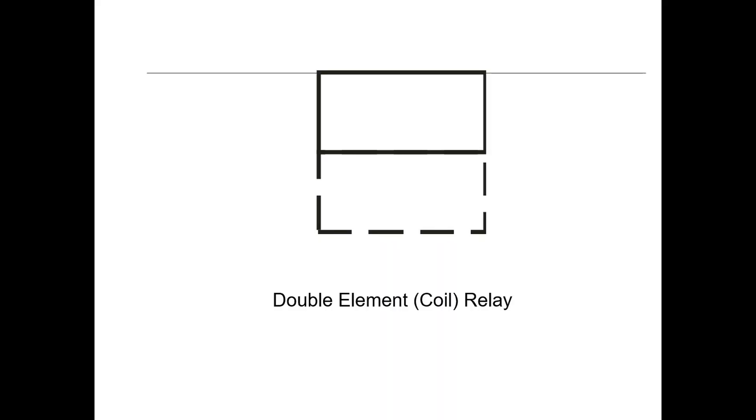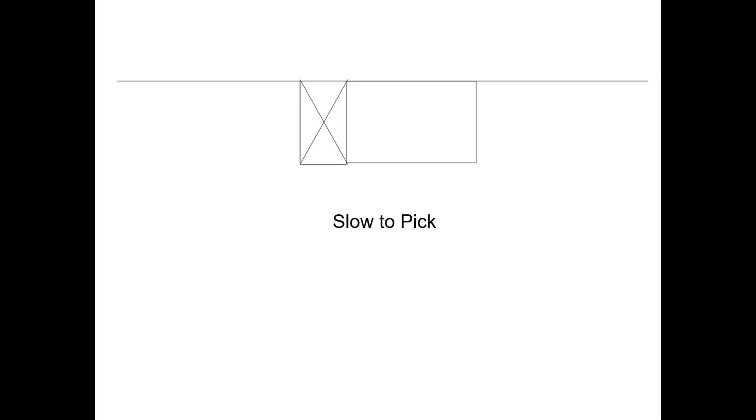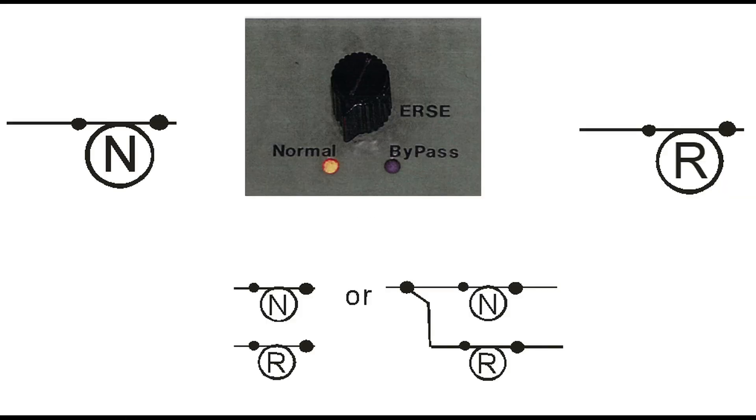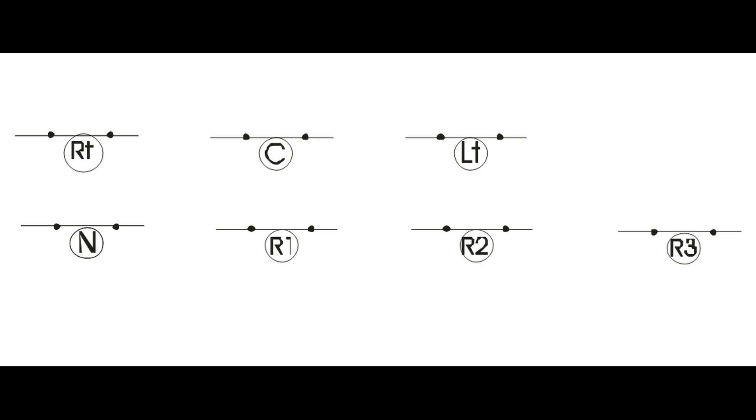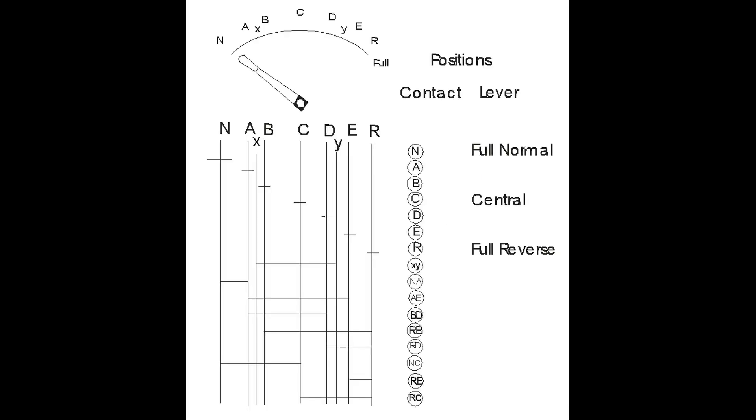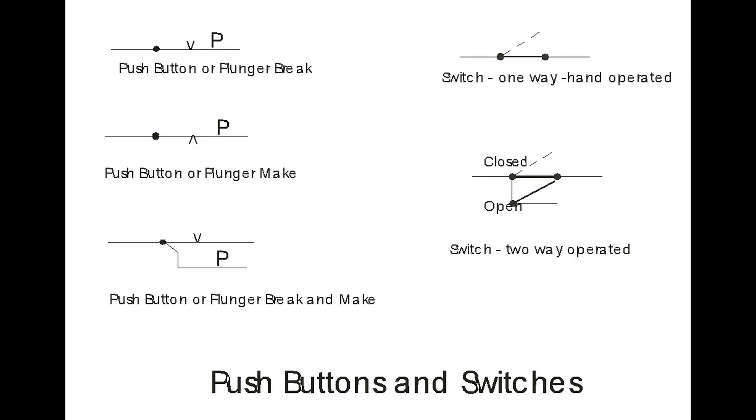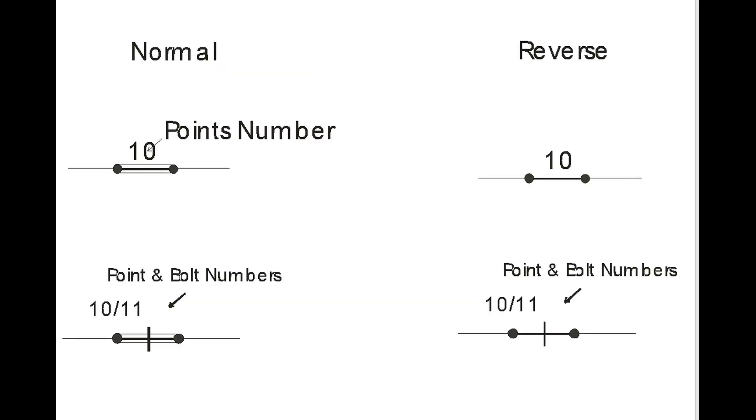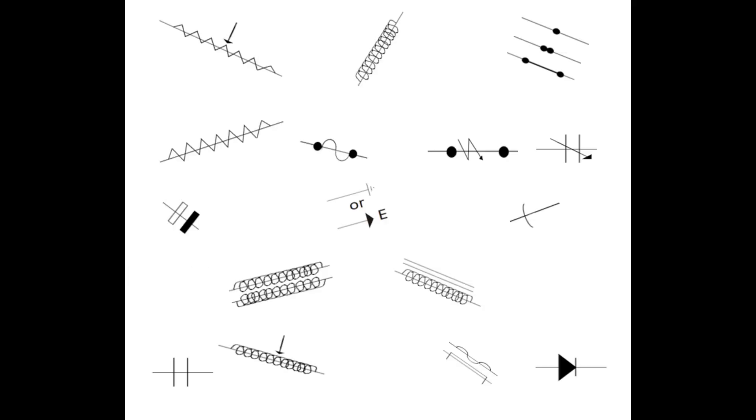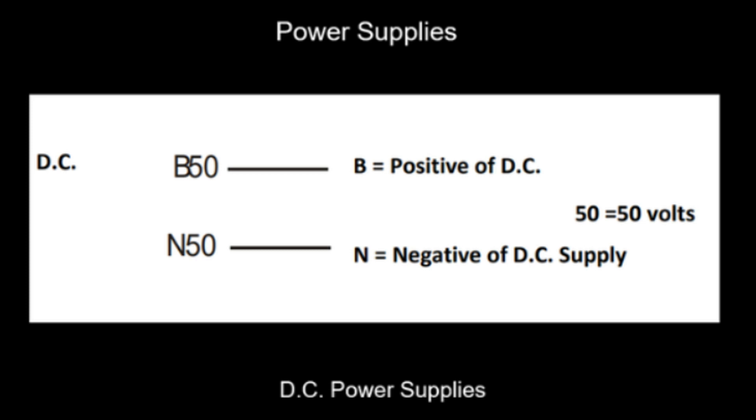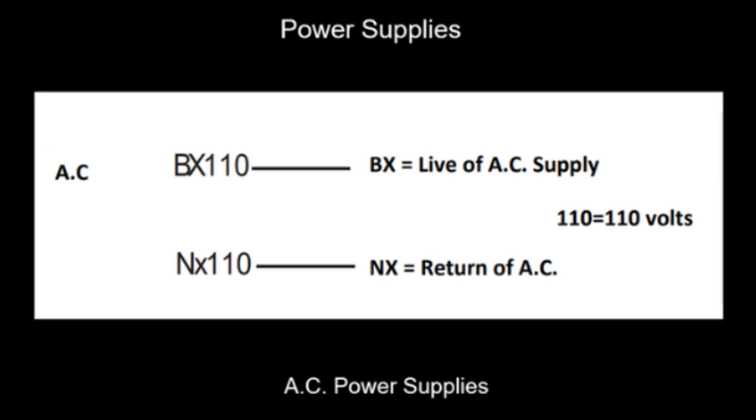The symbols used for different stages of relays are then covered including double coil or double element relay, slow to drop relay, slow to pick relay. Moving on from relays, we look at the various thumb switches, where they are used and how they are shown on diagrams. Then on to lever bands and how they are shown on diagrams. Miscellaneous symbols are shown such as push button and switches, point contacts and electrical components.